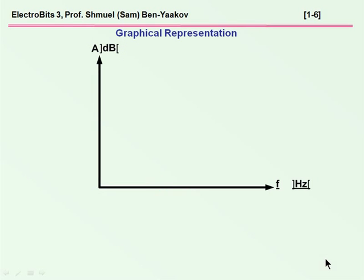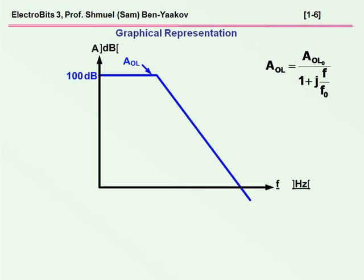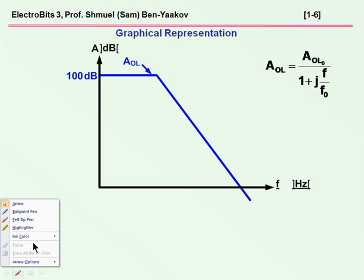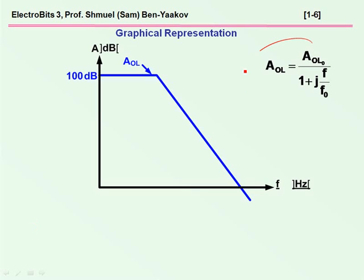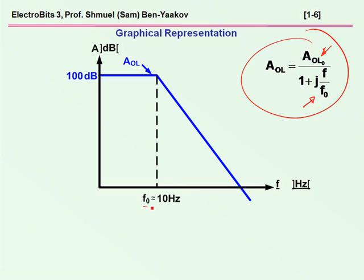Let's see now how we can get the closed-loop response — that is, the bandwidth of the amplifier in closed loop. We start off by drawing the A open loop transfer function. We assume that this is known either graphically or as an expression shown here, in which case we have a gain plus a pole at F sub 0 — in this private case, it's 10 hertz.